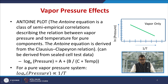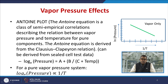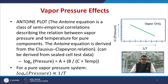Now let us look at the vapour pressure effect. This is attributed to the Antoine theory, which you can find in chemical engineering thermodynamics. The Antoine equation is a class of semi-empirical correlation describing the relation between vapour pressure and temperature for a pure component.